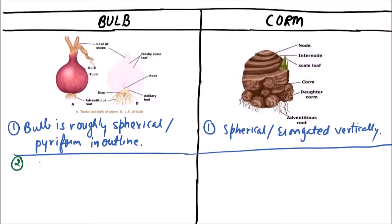In bulb, stem is reduced to a conical disc. This is the disc-like structure which is representing a reduced stem. In corm, stem is swollen or enlarged.